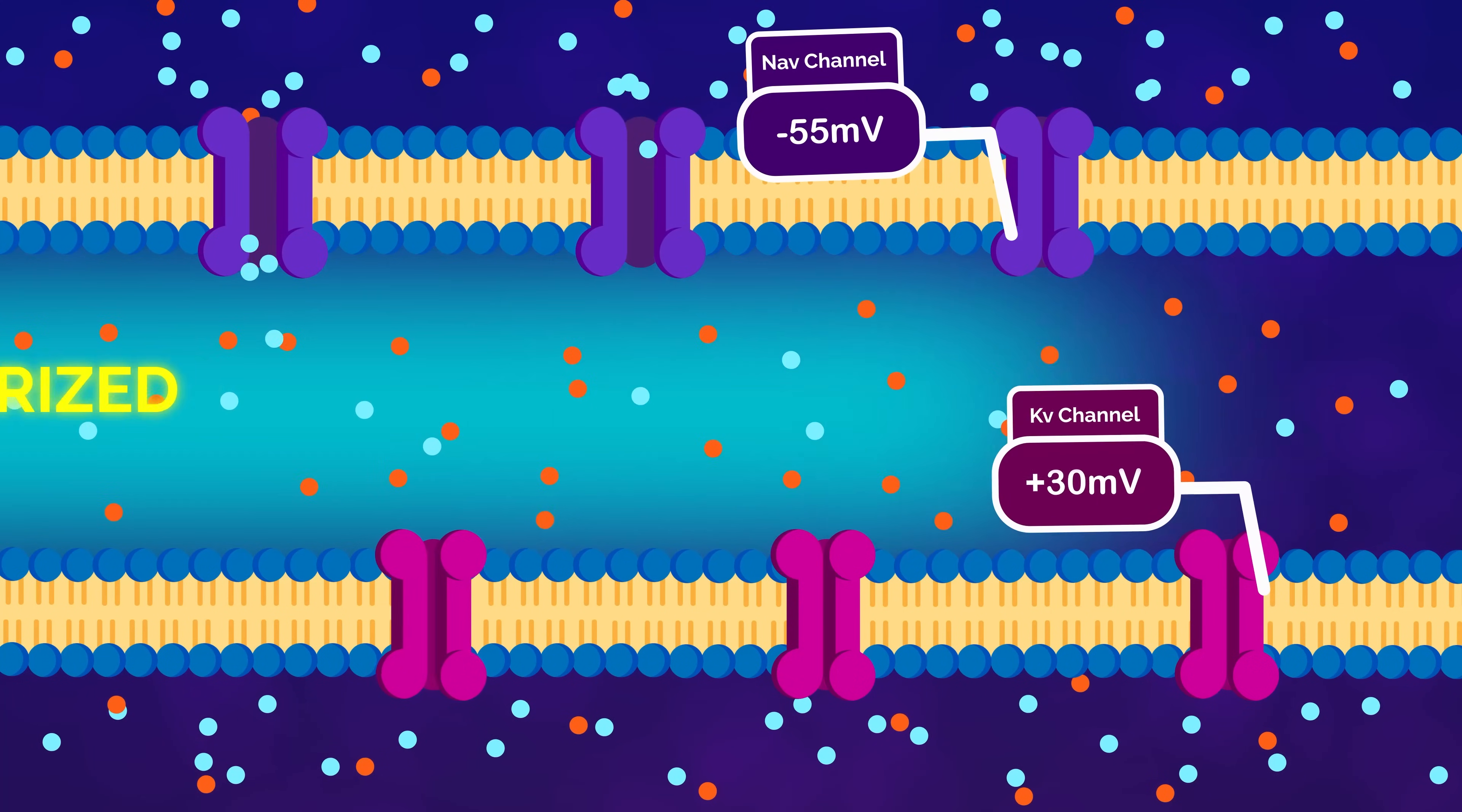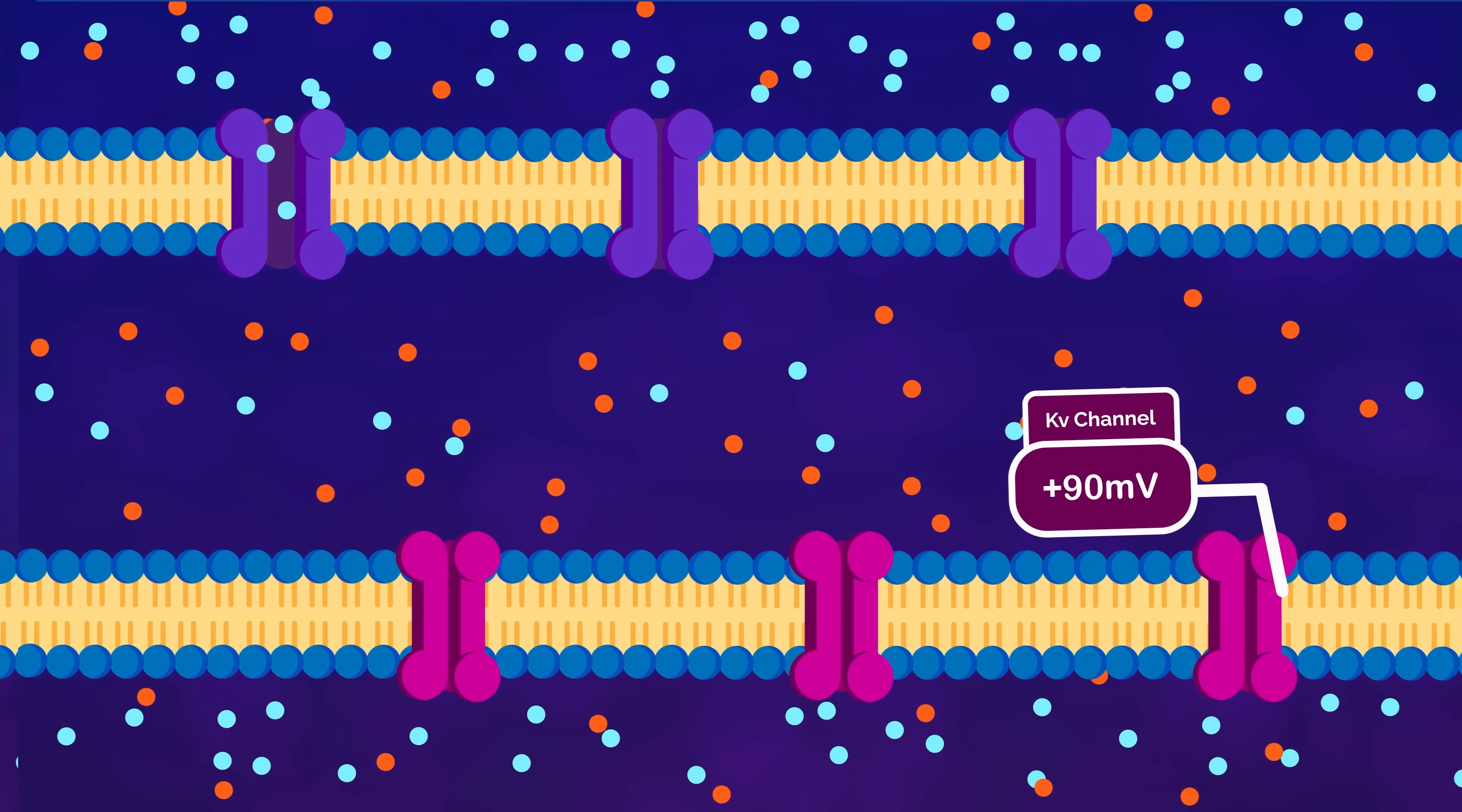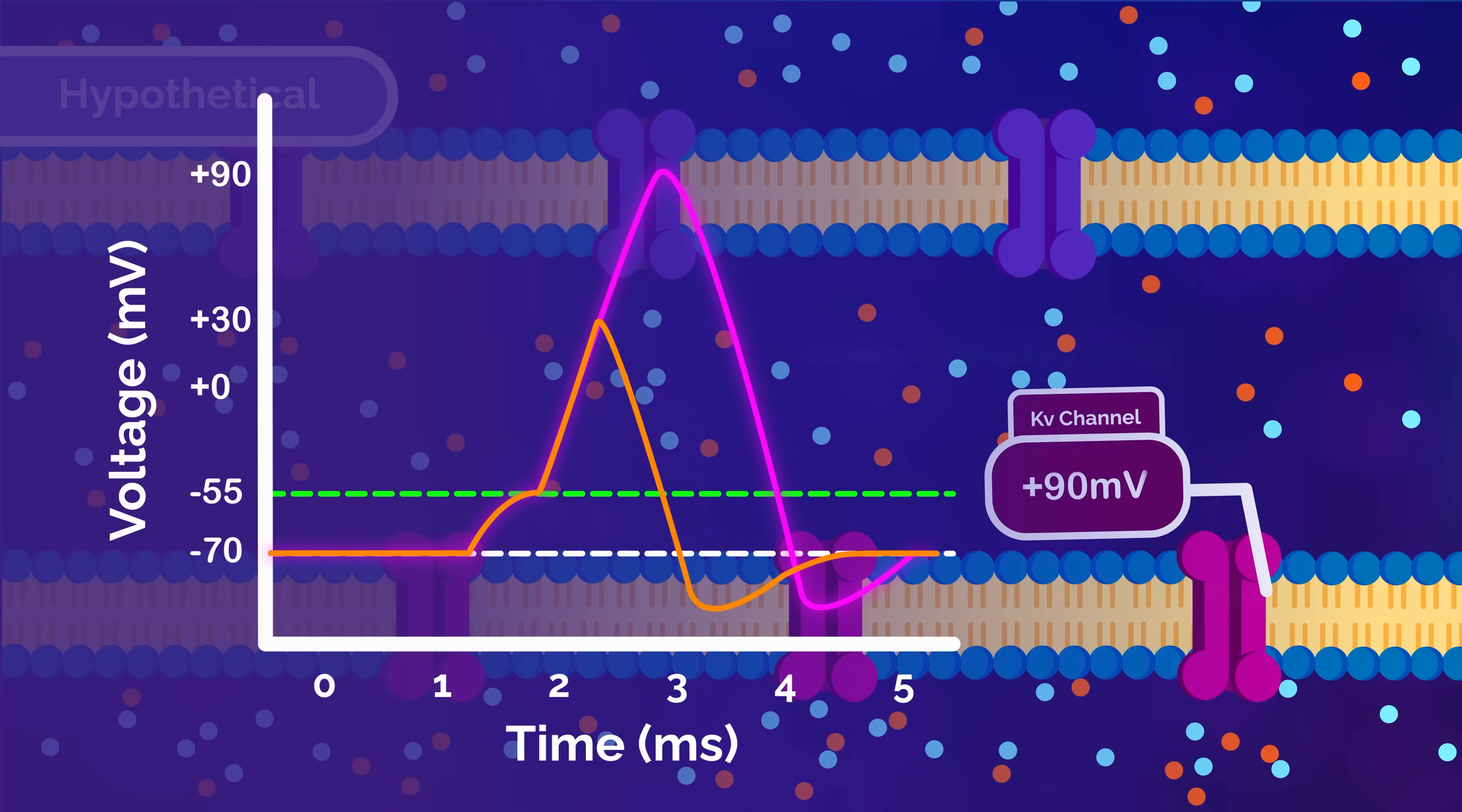Here's how I approached it. KV channels are responsible for repolarizing the membrane after the depolarization spike. If those channels require a higher voltage threshold to open, they'll activate later, meaning repolarization is delayed. That means the falling phase of the action potential is prolonged. You'd see a broader, more drawn-out waveform.